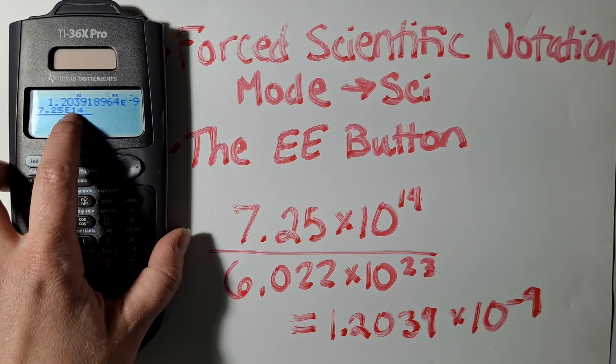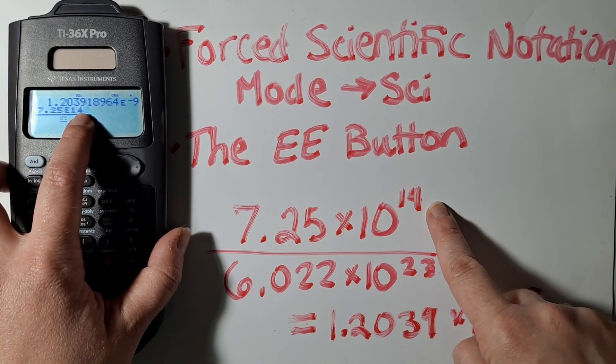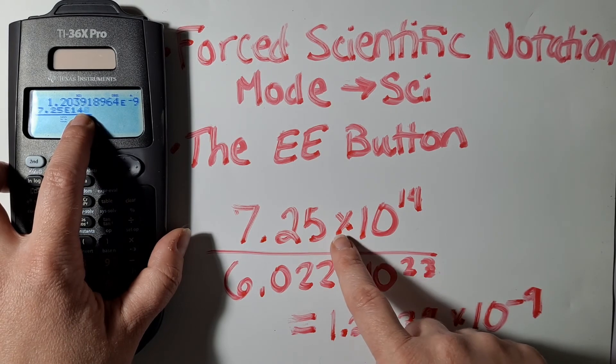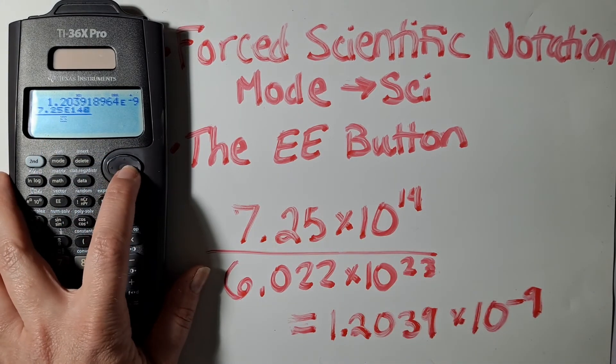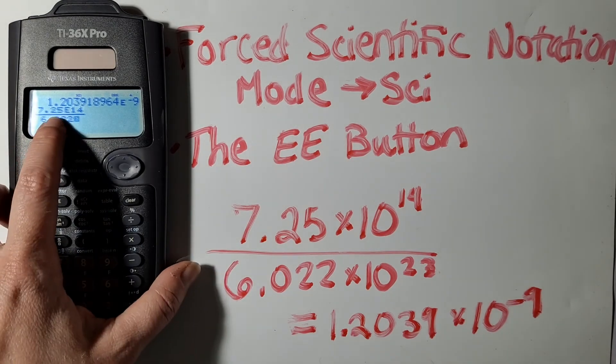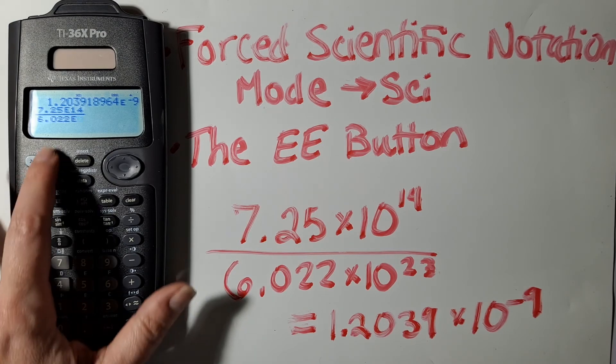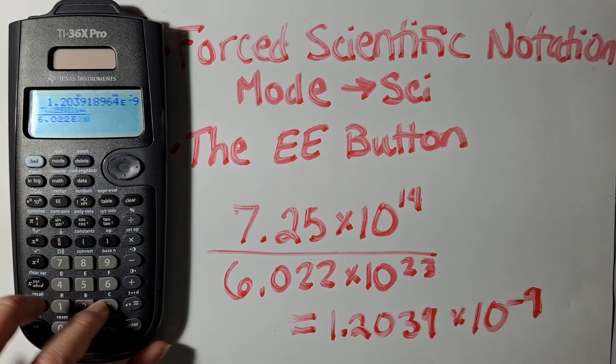And so I'm typing in E14 because the exponent was 14. I don't need to type in times 10. This tells my calculator that the exponent for the 6.022 is times 10 to the 23rd.